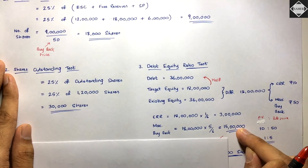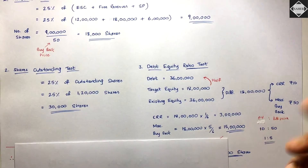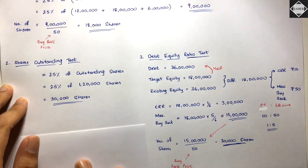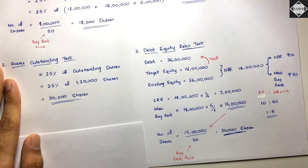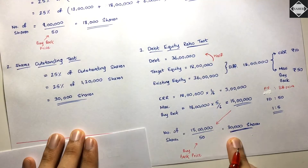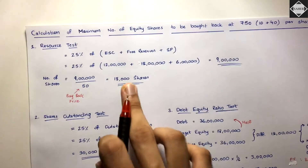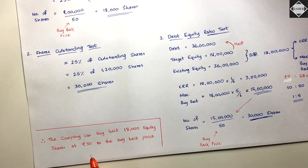Convert ₹15 lakhs to number of shares: 15,00,000 ÷ 50 = 30,000 shares according to the Debt-Equity Ratio Test. Now compare all three: Resource Test = 18,000 shares, Shares Outstanding Test = 30,000 shares, Debt-Equity Ratio Test = 30,000 shares. The lowest is 18,000 shares. Therefore, the company can buy back 18,000 equity shares at ₹50 as the buyback price.